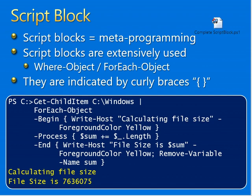Script blocks equal metaprogramming. Script blocks are extensively used when you are using objects with ForEach-Object or Where-Object statements. They are indicated by curly brackets. You can see the example below to calculate the size of a file. Every time Where-Object or ForEach-Object is used, script blocks are utilized as well. That was a basic example for ForEach-Object used to calculate the file size and write the sum as output.